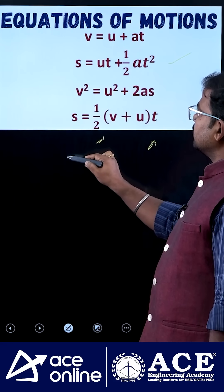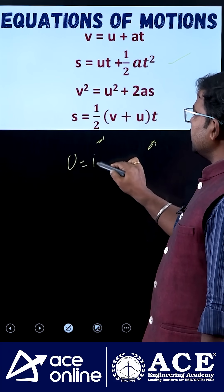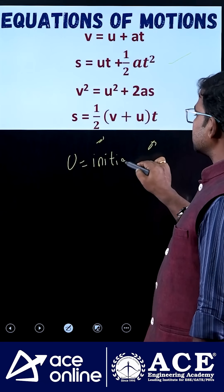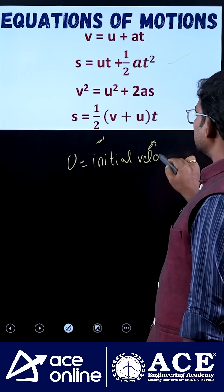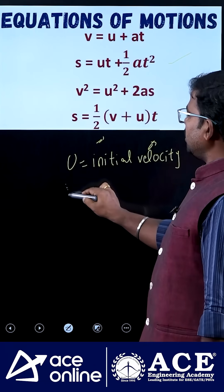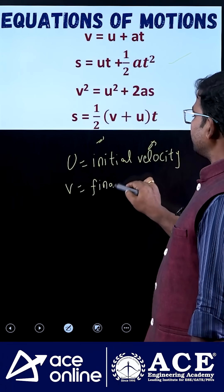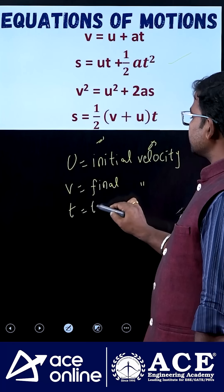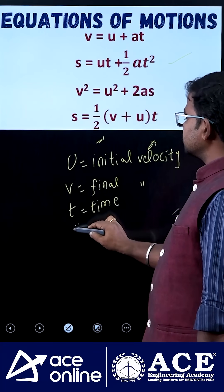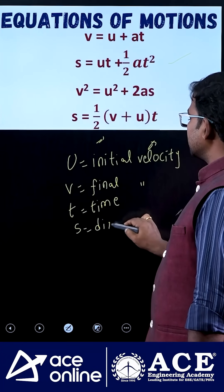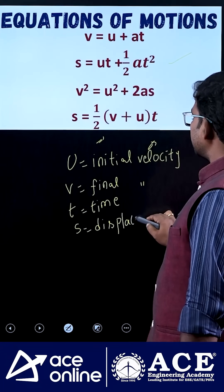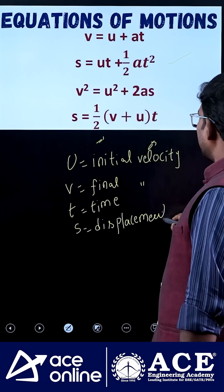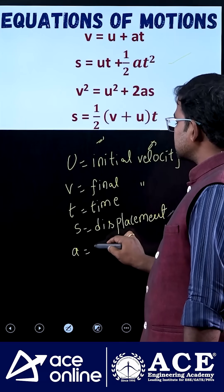Okay, so here u is nothing but initial velocity. Next, v is nothing but final velocity. Next, t equals time. s equals displacement. Next, a equals acceleration.